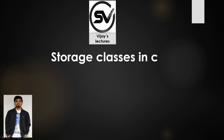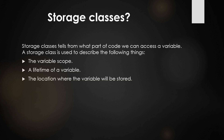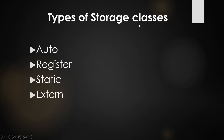Hello guys, welcome to my channel. Today's topic is about storage classes in C. Storage classes tell from what part of a code we can access a variable. A storage class describes mainly three things: the lifetime of the variable, the scope of the variable, and where the variable has been stored. We have four types of storage classes: auto, register, static, and extern.